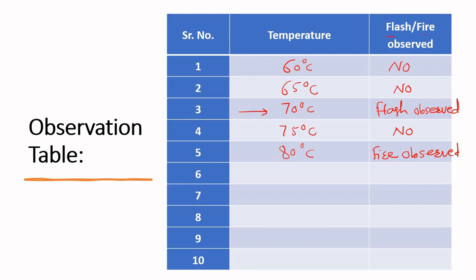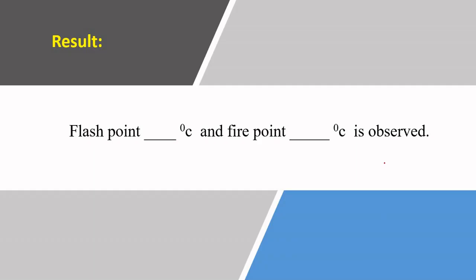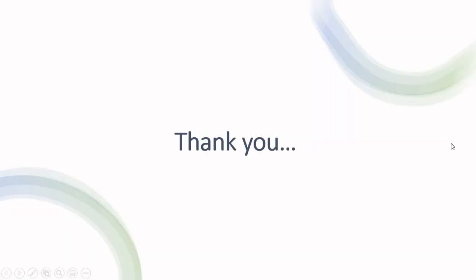This observation gives information about the flash point and fire point: the flash point is 70 degrees Celsius, because a momentary flash is observed at 70 degrees Celsius, and the fire point is 80 degrees Celsius, where the vapours of lubricant oil catch fire and burn for about 5 seconds. The flash point is 70 degrees Celsius and the fire point is 80 degrees Celsius. In this way we have determined the flash point and fire point using the Pensky-Martens apparatus for a given lubricant oil. Thank you.